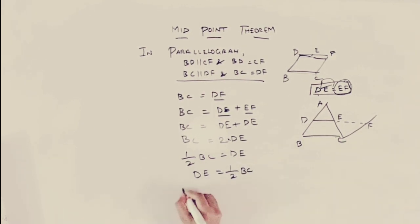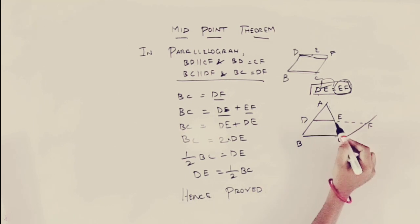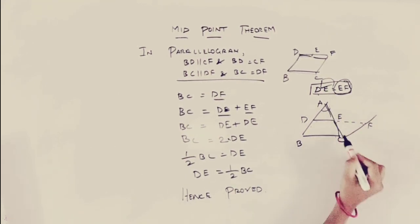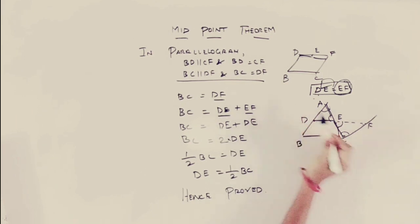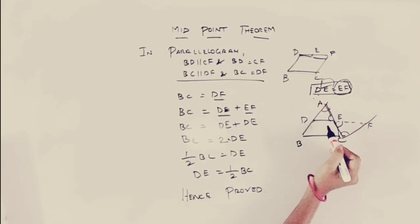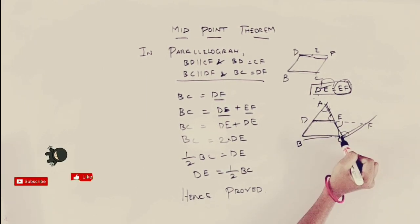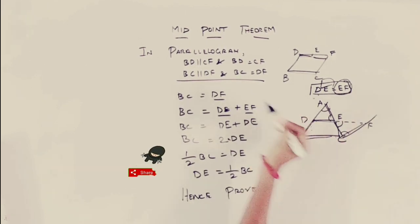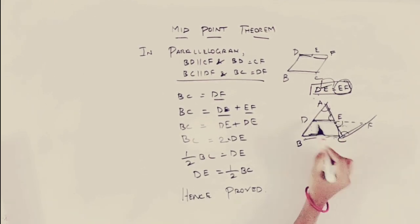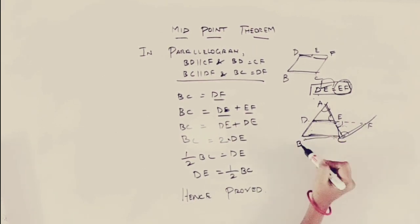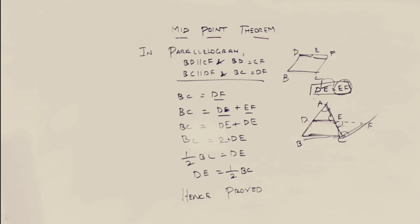So this is our proof. DE equals half of BC — hence proved. In summary: in the two triangles, we proved congruence using one side equal, vertically opposite angles equal, and alternate angles equal — by ASA. From congruent triangles, sides are equal. Using BC equals DE plus EF and EF equals DE, we get 2DE equals BC, so DE equals half of BC. Hence, the midpoint theorem is proved. Thank you, students.